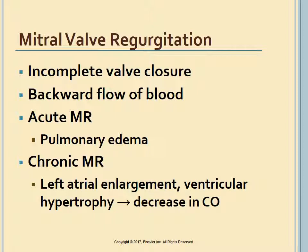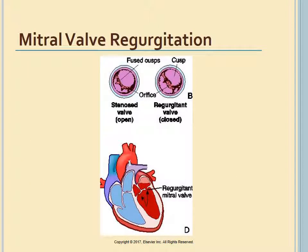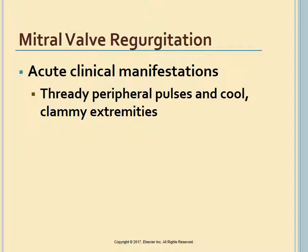In chronic MR, the additional volume results in left atrial enlargement, left ventricular dilation and hypertrophy, and finally a decrease in cardiac output. The clinical course of MR is determined by the nature of its onset. Patients with acute MR will have thready peripheral pulses and cool, clammy extremities. A low cardiac output may mask a new systolic murmur.